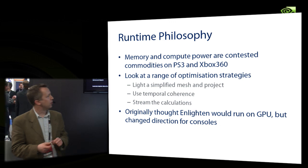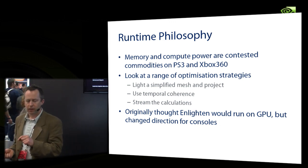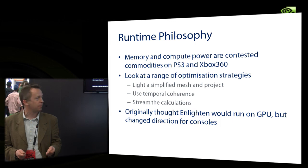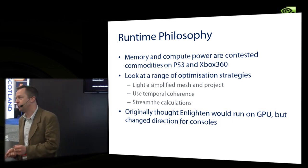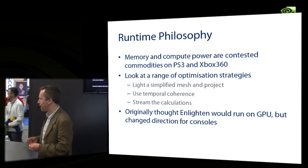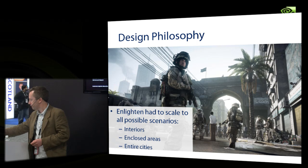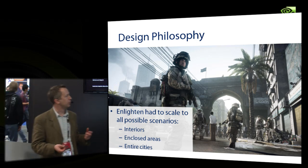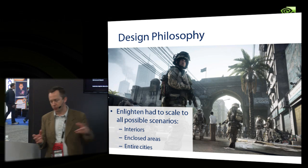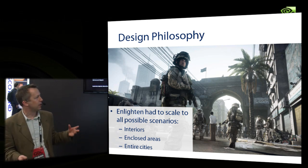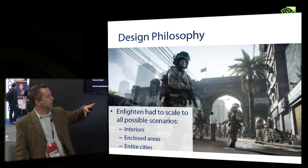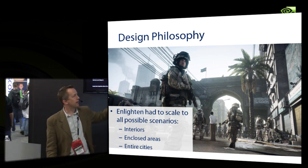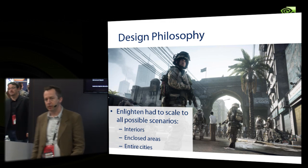We originally thought Enlighten would run on the GPU when we first designed it, but when working with current consoles we realized there's no room on the GPU, so we put it on the CPU. Now we've actually put it back onto the GPU, which is kind of where we always thought it would end up. We also had to scale to all possible game scenarios — from simple interiors and closed outdoor environments right through to entire cities. Today an entire Frostbite level, a 4k by 4k map, can be updated dynamically in real time using Enlighten.